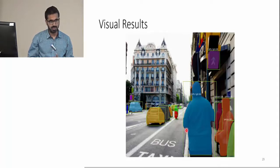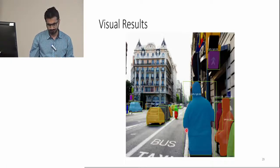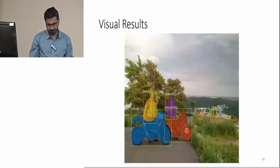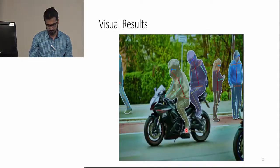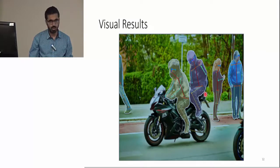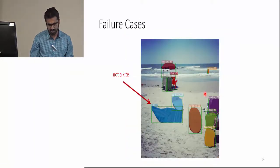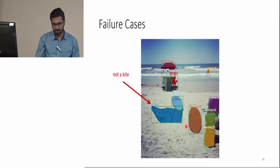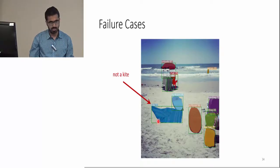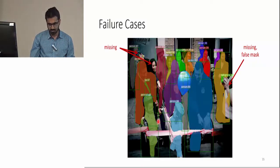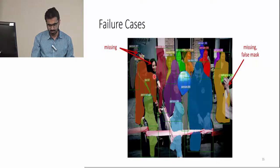These are some visual results, and these are the results for human pose estimation. Some failure cases: here the failure is not of the mask prediction branch but for classification. This object is classified as a kite and it's not a kite. Some more failures: here we can see missing masks, and here also we can see missing masks.